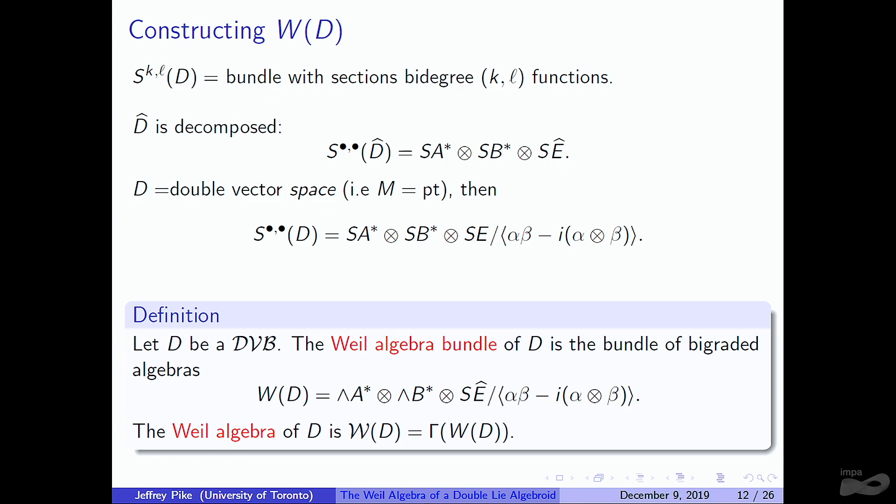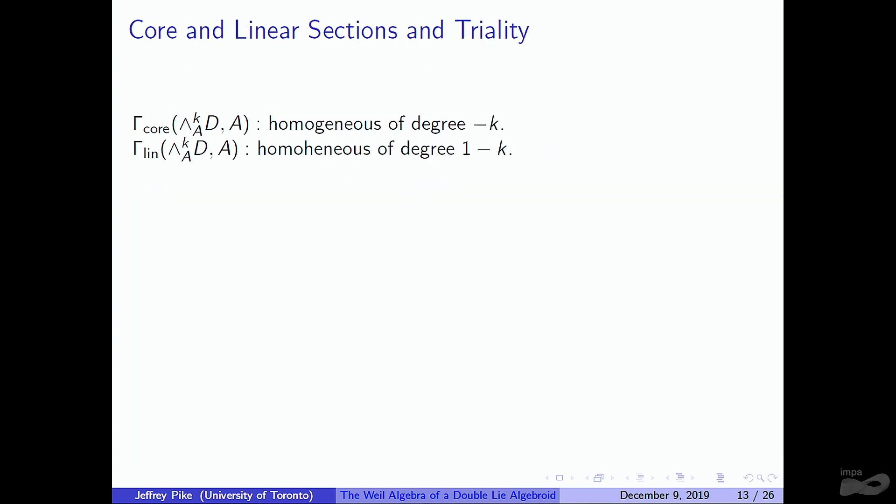This is essentially the definition we end up with for Weil algebras, which is an antisymmetric version. A* would have bi-degree (1,0), B* has bi-degree (0,1), and E has bi-degree (1,1). So when we antisymmetrize, the odd elements A and B should be replaced with wedge products, but the even elements of bi-degree (1,1) should remain a symmetric power. We arrive at this definition for the Weil algebra bundle. That's the description in the theory of double vector bundles — for any double vector bundle you can associate this.